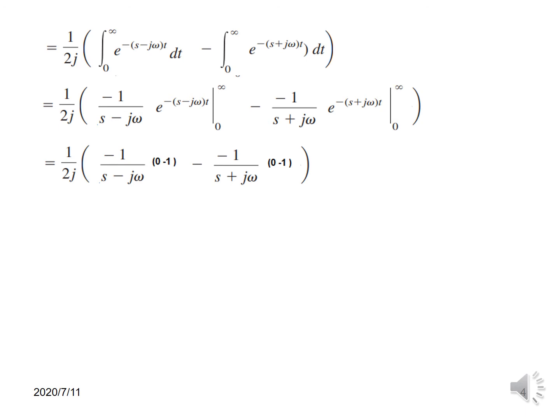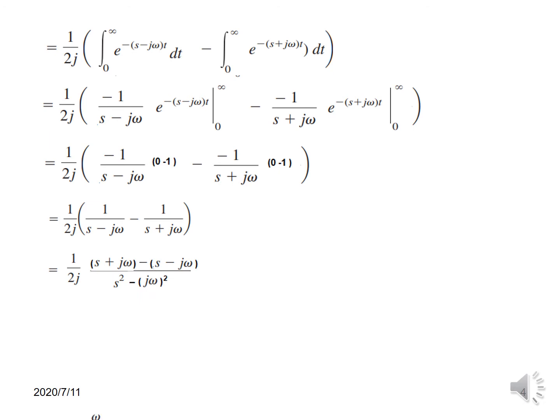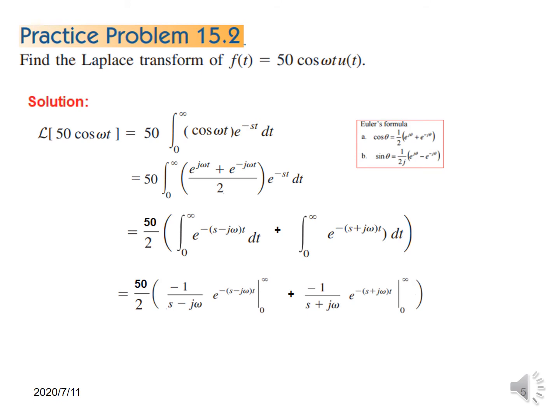After applying the limits, the first term gives 1/(s − jω) and the second term gives −1/(s + jω). Taking the LCM and solving, s² cancels and we are left with 2jω in the numerator. The 2j cancels, giving the final answer: Laplace of sine omega t equals ω divided by s² + ω².